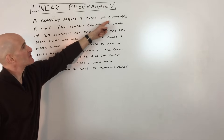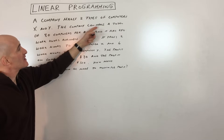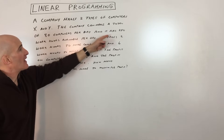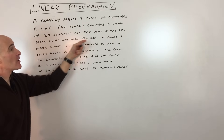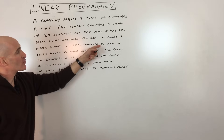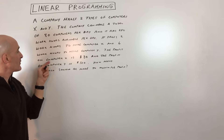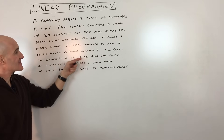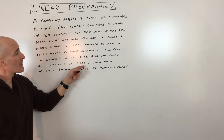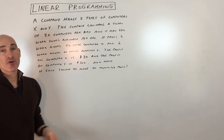A company makes two types of computers, X and Y. The company can make a total of 80 computers per day and has 240 work hours available per day. It takes two work hours to make computer X and six work hours to make computer Y. The profit on computer X is $80 and on computer Y is $120. How many of each should be made to maximize the profit?